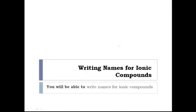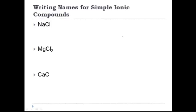In the last lesson you learned how to write formulas for ionic compounds. We're going to follow up today by learning to write names for ionic compounds. We're going to start the same way we did last time by looking at the very simple ionic compounds that only include two different elements.